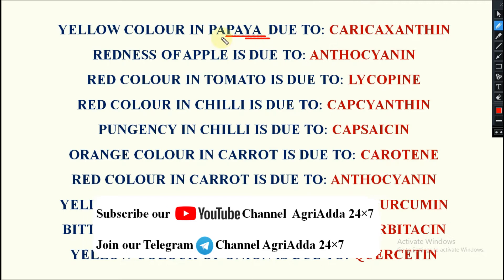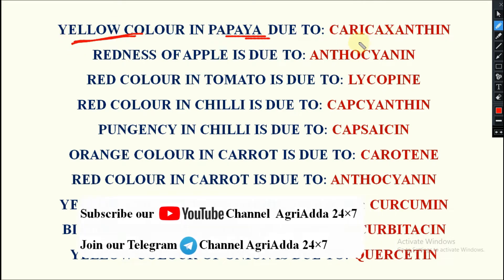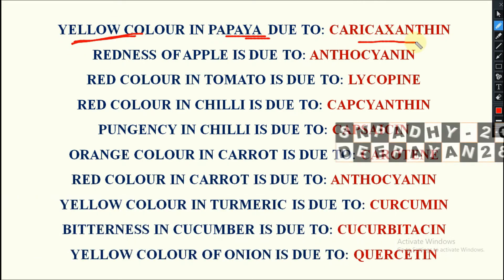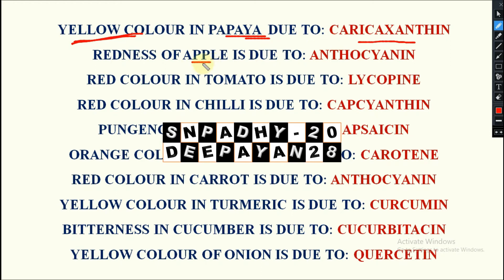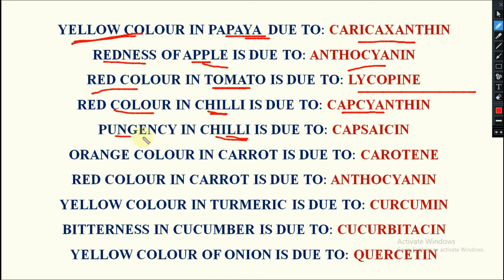In papaya, yellow color appears due to carixanthin. In apple, redness is due to anthocyanin. In tomato, red color is due to lycopene. In chili, the red color is due to capsanthin, and the pungency in chili is due to capsaicin.